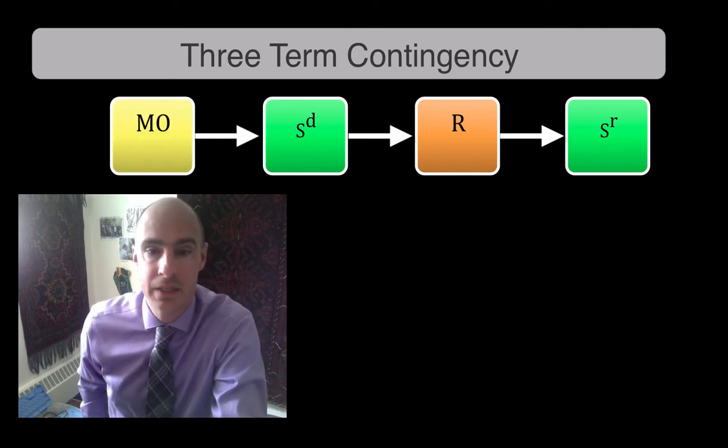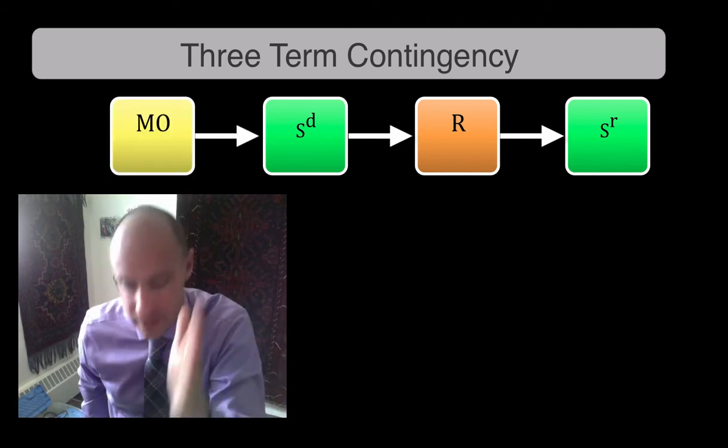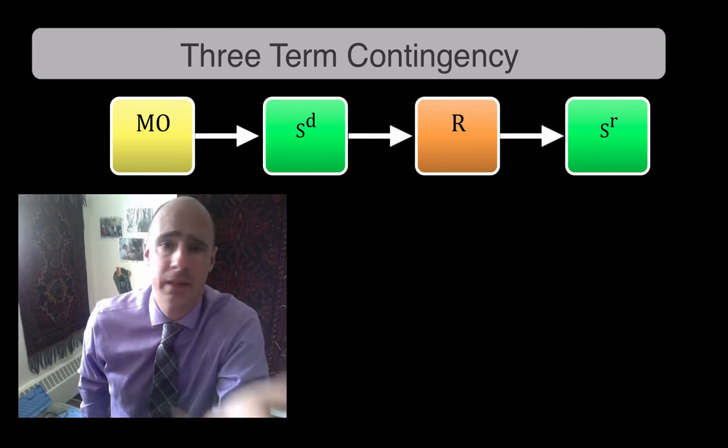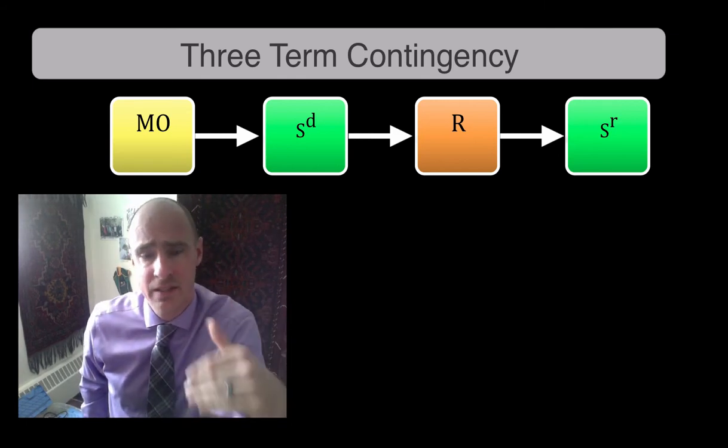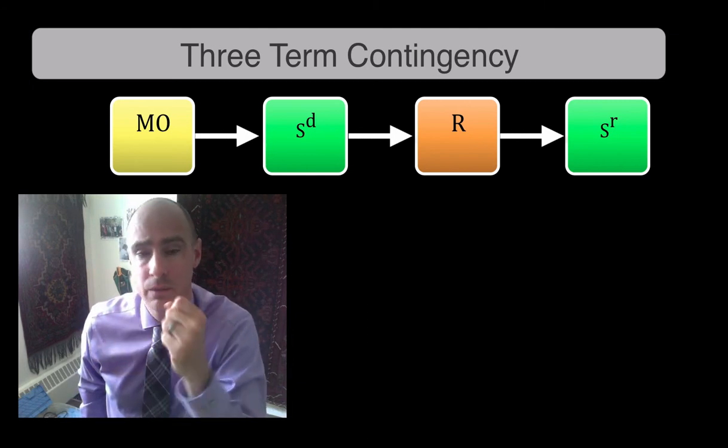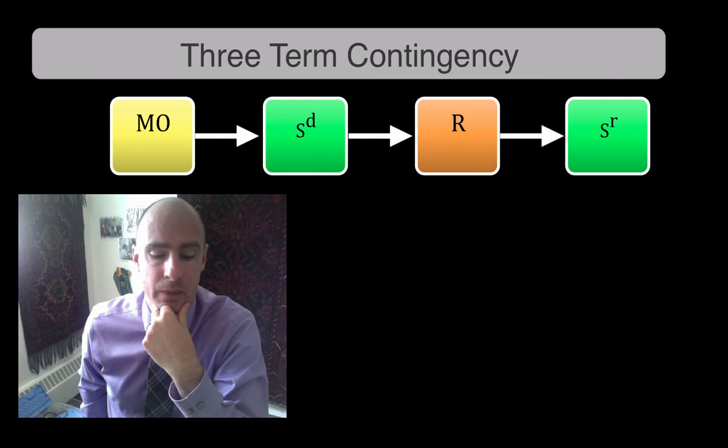But it's not like you go MO happens and then an SD, then an R and an SR. The MO could happen months ago. It could be happening concurrently. But it doesn't affect the SD. It affects the reinforcer, right? So it is what drives the, it changes the value of that reinforcer.